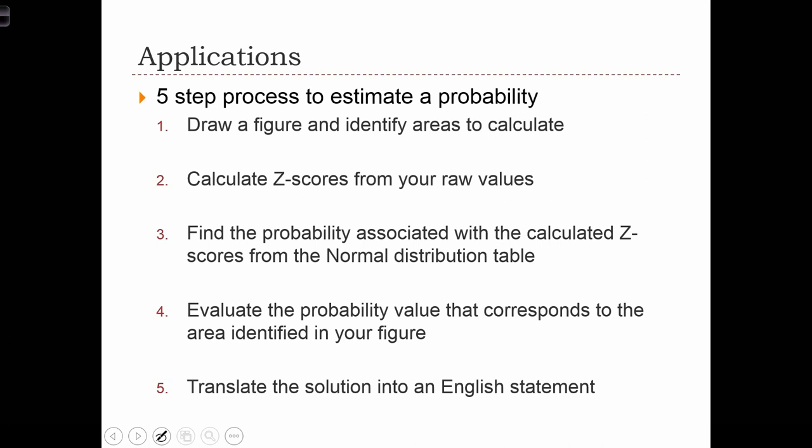Once we've got our probabilities of our zones, we're going to have to combine the zones in different ways in order to identify and calculate the exact probability in question. Finally, we're going to take our solution and translate that into an English statement.